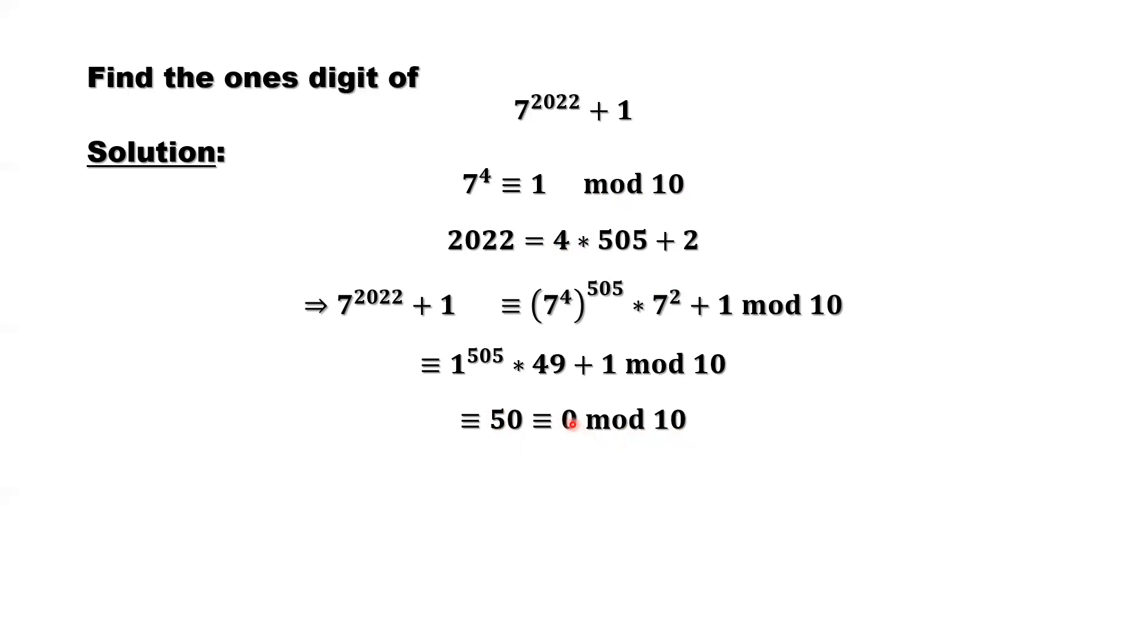Or what is the remainder of 50 divided by 10? It's 0. So 0 is the remainder on the left-hand side, and also 0 is the remainder for the left-hand side. This is the right-hand side. So we find the ones digit of this is 0.